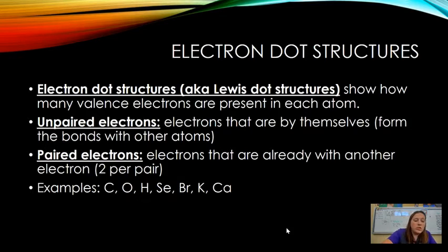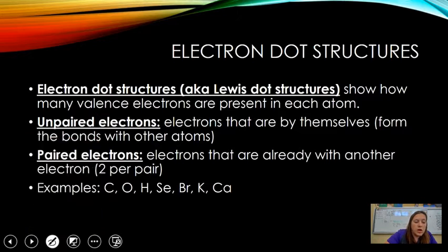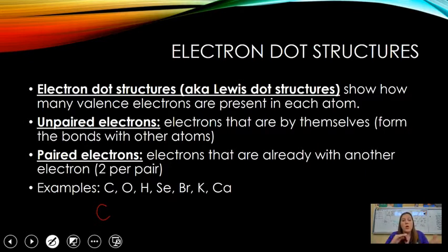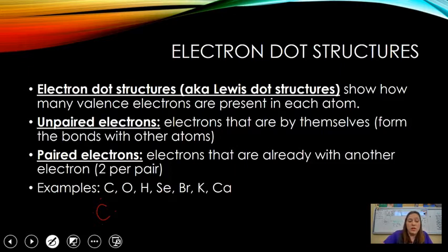Let's look at some examples. Carbon has four valence electrons — I know that because it's in group 4A or group 14 on the periodic table. So carbon has one, two, three, four valence electrons, giving it four more spots to bond in order to fulfill the octet.